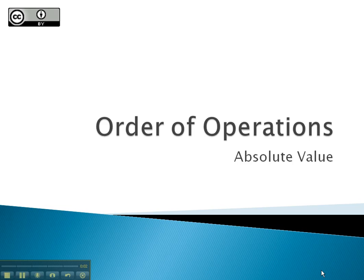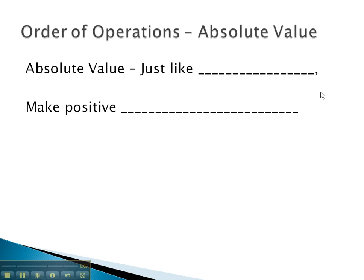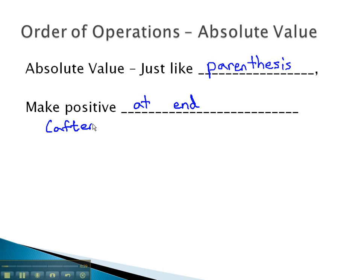In this video, we're going to take a look at how absolute value works into the order of operations. Absolute value in a problem works just like parentheses, which means we will work inside the absolute value first and finally make it positive at the end, or after the inside is simplified. Once that's complete, we can finish the problem like any other order of operations problem.